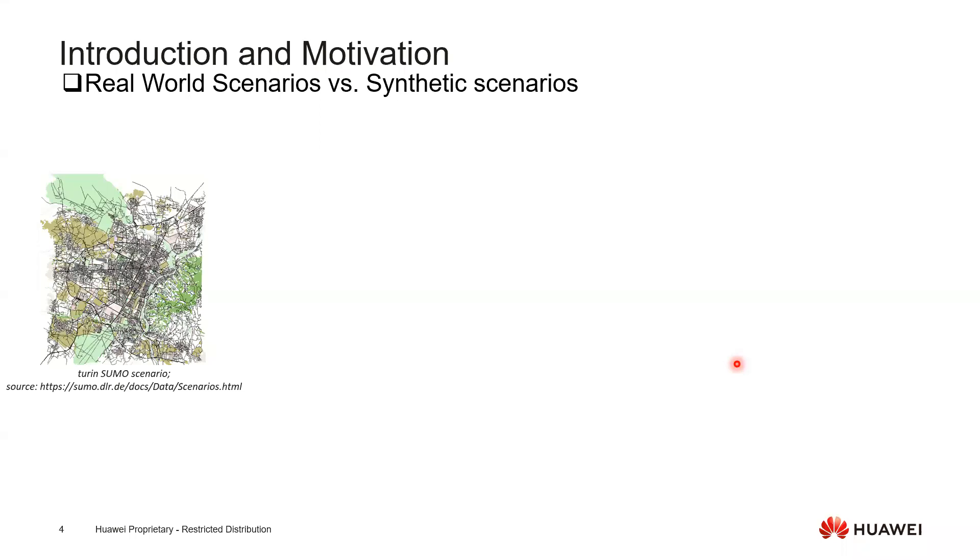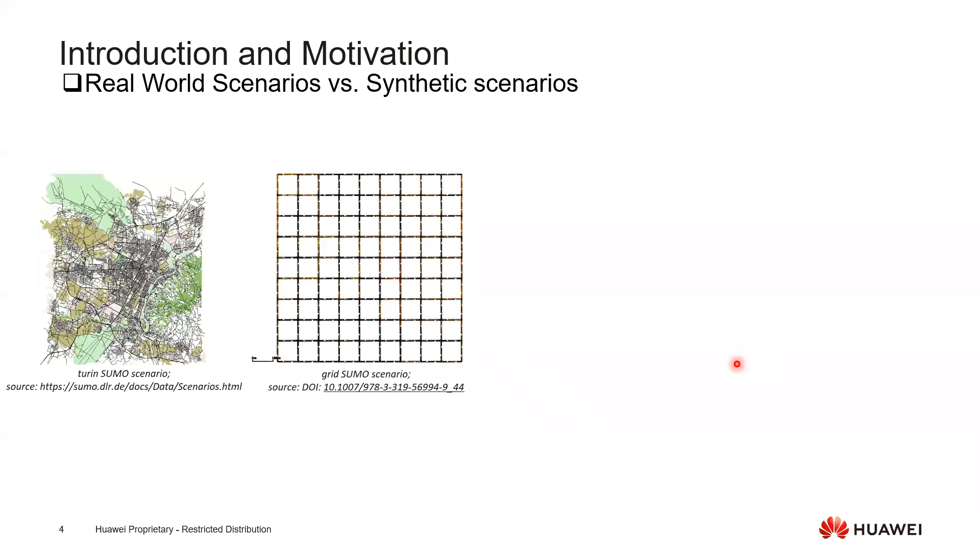But in contrast to those real world scenarios, there is another kind called synthetic scenarios. As an example here, I showed you the grid-Zumo scenario or scenarios which only contain one or two intersections. Researchers also like to use them because sometimes their research objective doesn't really need a real scenario, and such kind of synthetic can also fulfill their requirements.